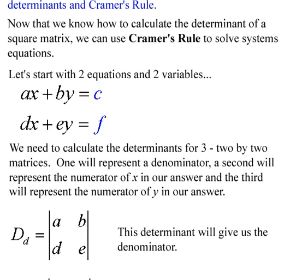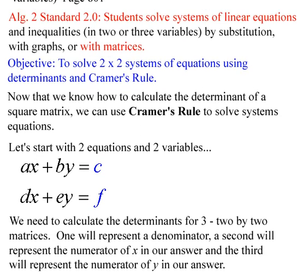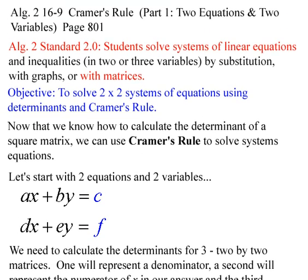Since you can't divide by zero, those cases are important to recognize. To summarize: denominator is 0, numerator of y is not 0 — parallel lines, no solution, inconsistent. Denominator is 0, numerator of y is 0 — same line, consistent and dependent. Today's goal was finishing State Standard 2 for two equations and two variables. The next episode will involve three equations and three variables, using Cramer's Rule and matrices to find their solution.